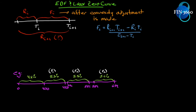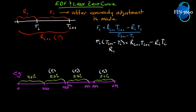Let me go through the derivation of how that is done. All we have to do is multiply both sides by the numerator — we get fi times (ti+1 minus ti) equals r(i+1) times ti+1 minus ri times ti. Bringing ri times ti over and dividing through by ti+1, we will get r(i+1) equals...